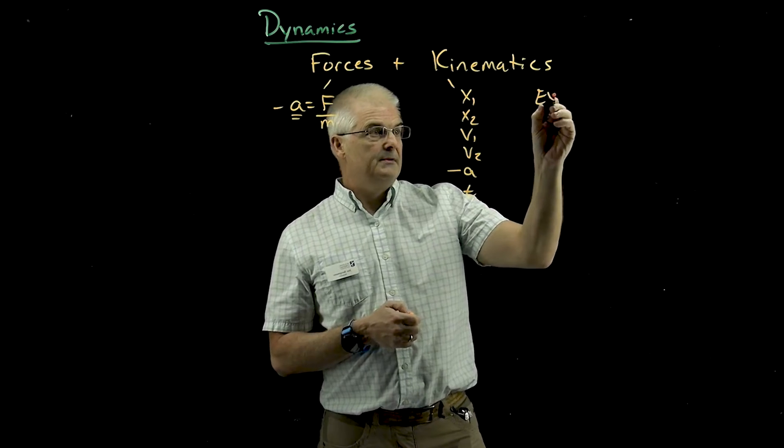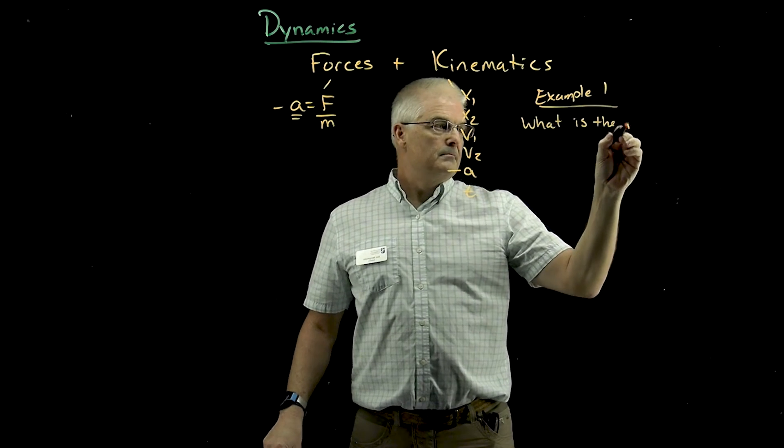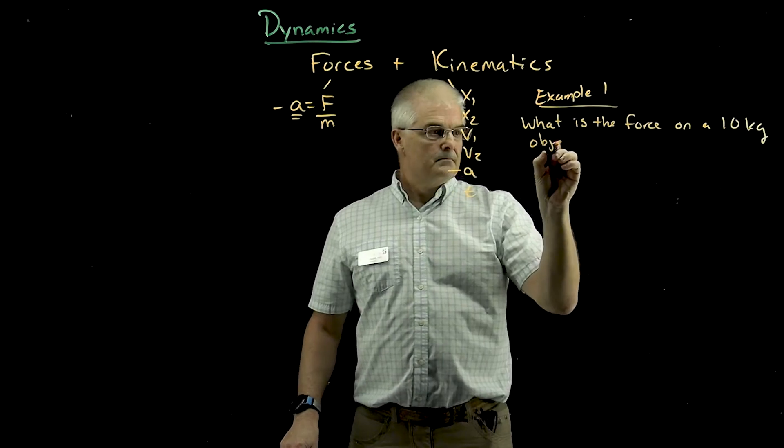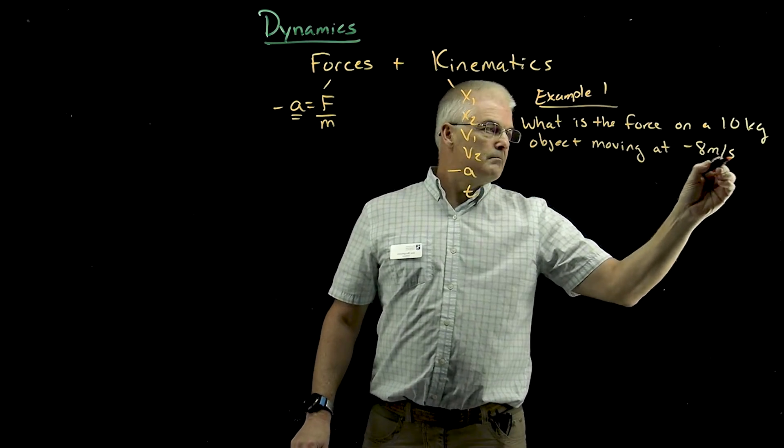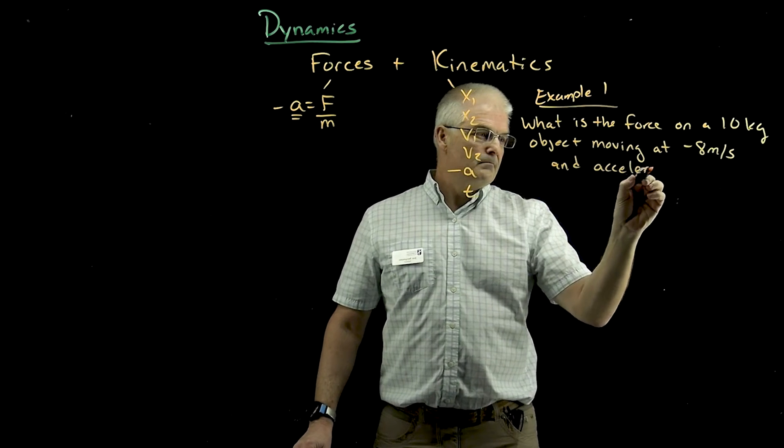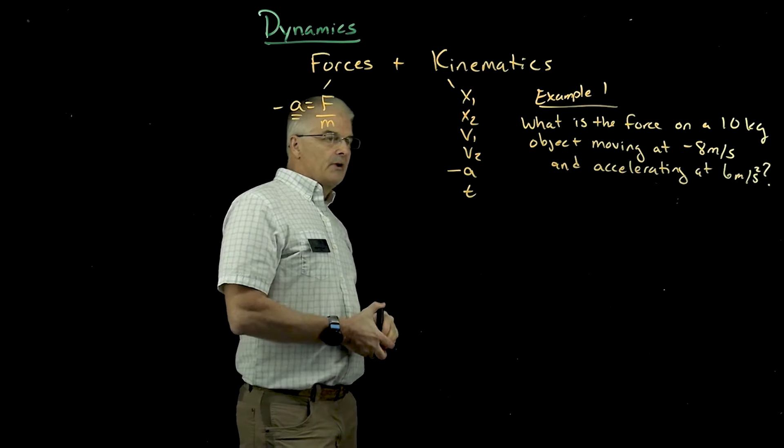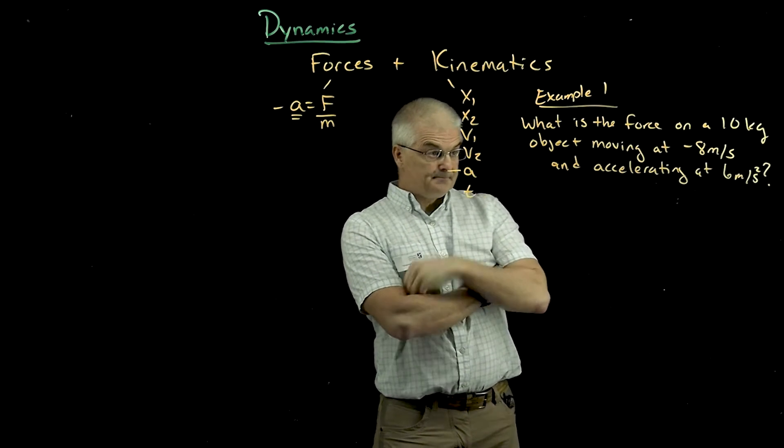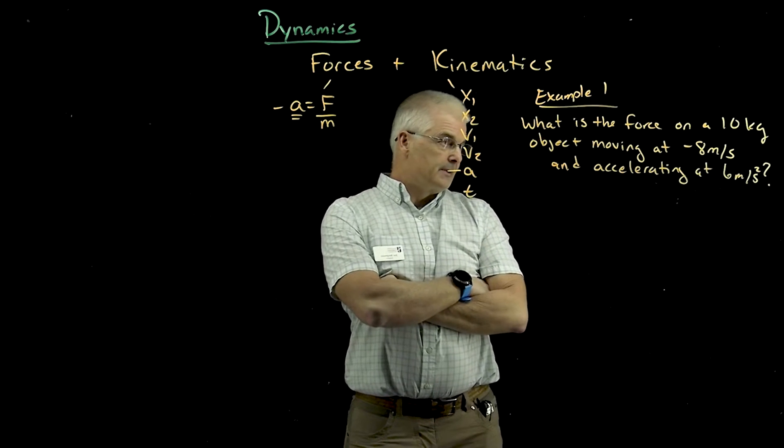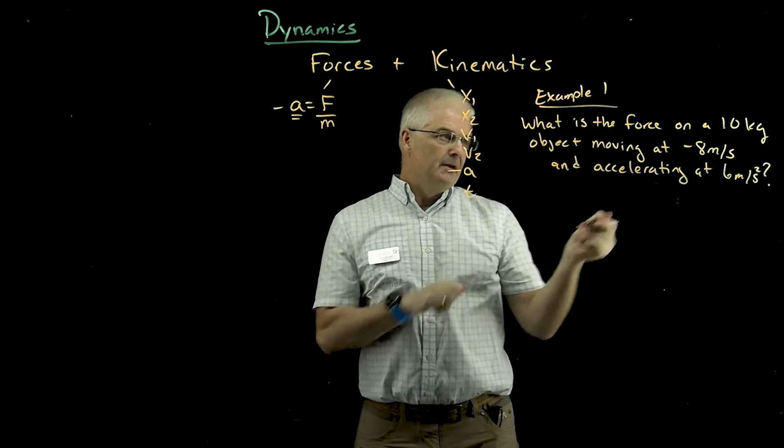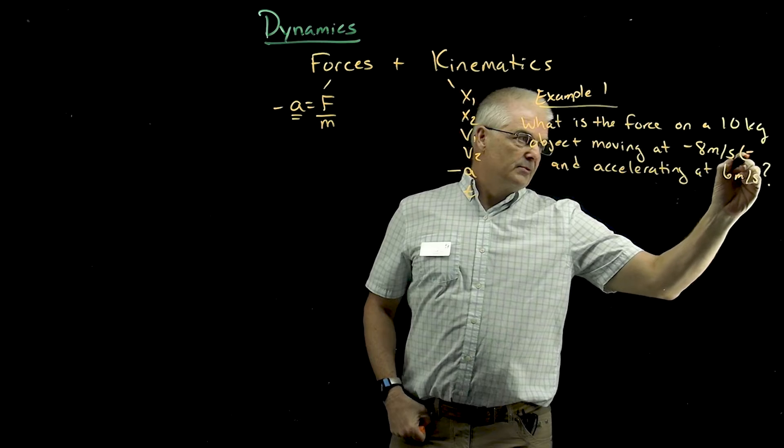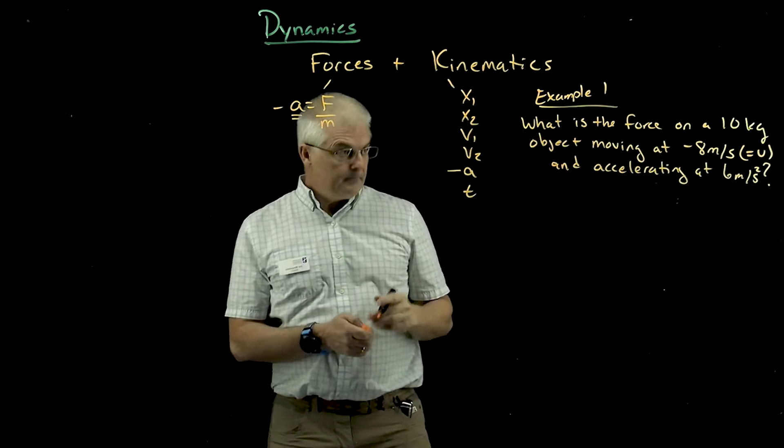Let's call this example one. What is the force on a 10-kilogram object moving at negative 8 meters per second and accelerating at 6 meters per second? So I could say moving with a velocity, v equals negative 8.